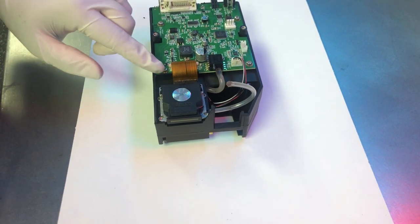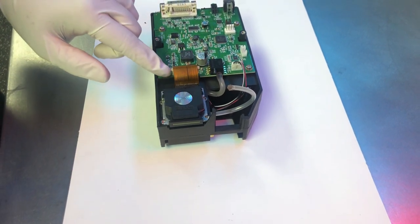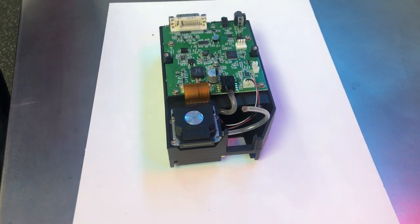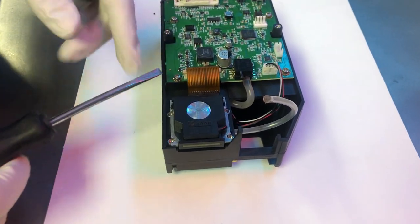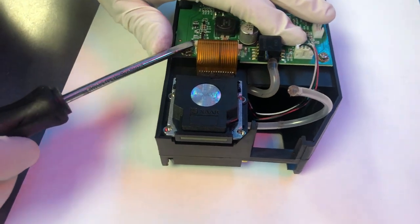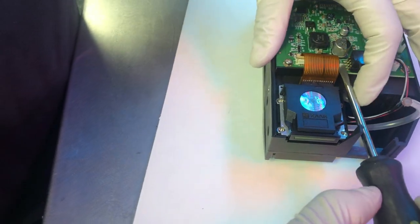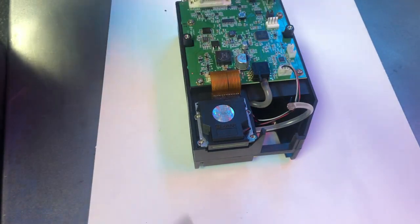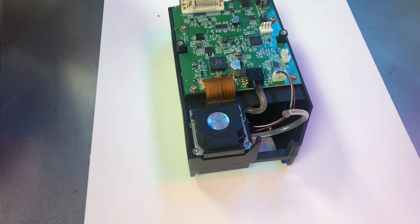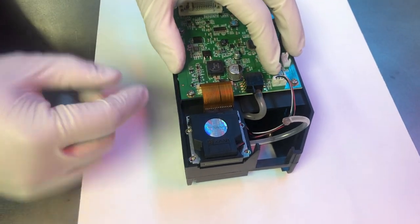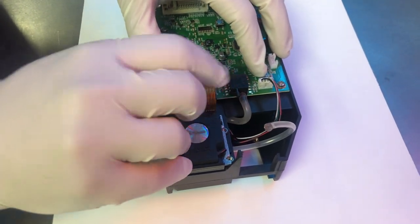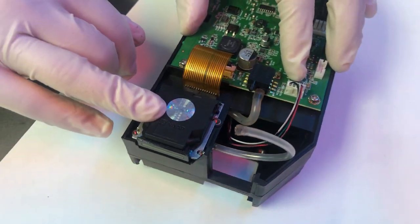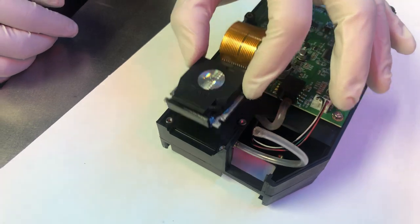Once the screws have been loosened, we're going to want to take the data cable and loosen that up from the main board. The best way to do that is to use a flat screwdriver and pop the tabs on either side. Once the tabs are lifted, the data cable should slide out. Now the print engine is able to be removed.